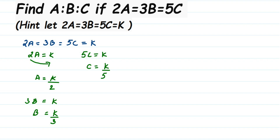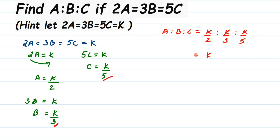I want to find out the ratio A to B to C. A is K/2, B is K/3, C is K/5. Now I want to remove the K. To do that I'm going to divide the whole ratio by K, so the denominator will get K. Whatever I do, I should do it in all the ratios — dividing everything by K gives K/2K to K/3K to K/5K, and the K cancels out.